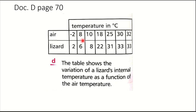The internal temperature of the lizard varies with the variation of the external temperature, so the lizard is a poikilotherm. We have two classifications of animals: poikilotherms and homeotherms. Animals that have a variable internal temperature are called poikilotherms. From this document we can conclude that the lizard is a poikilotherm, and its internal temperature varies with the variation of the external temperature.